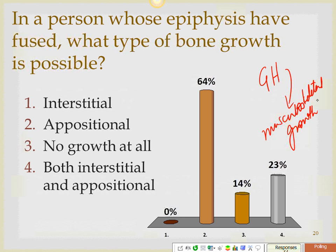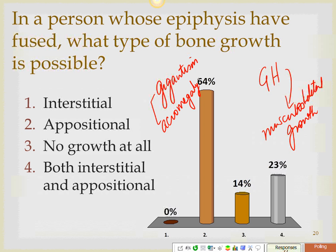When there is too much growth hormone produced during childhood, before the epiphyseal plates have fused, a person can be really, really tall — over 8 feet tall. This condition is known as gigantism, because the epiphyseal plates have not fused so the person keeps on growing. In contrast, acromegaly also involves excessive growth hormone, but here the person's epiphyses have already fused.